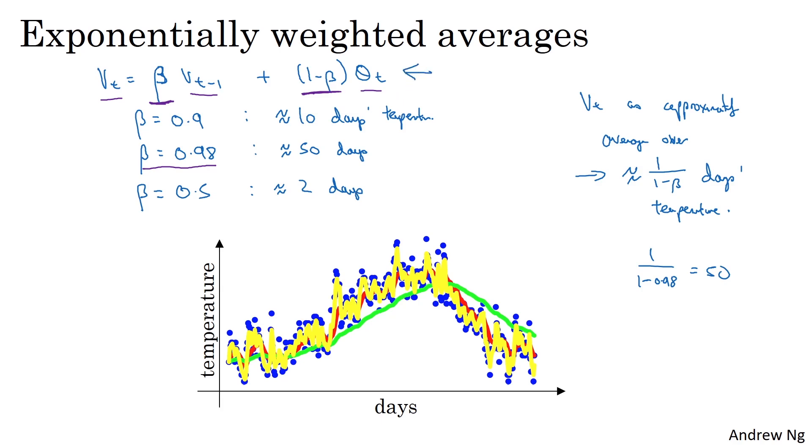So this formula is how you implement an exponentially weighted average. Again, it's called an exponentially weighted moving average in the statistics literature. And I'm going to call it exponentially weighted average for short. And by varying this parameter, or later we'll see, it's actually a hyperparameter of your learning algorithm, you can get slightly different effects. And there will usually be some value in between that works best. That gives you the red curve, which maybe looks like a better average of the temperature than either the green or the yellow curve. You now know the basics of how to compute exponentially weighted averages. In the next video, let's gain a bit more intuition about what it's doing.